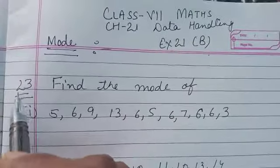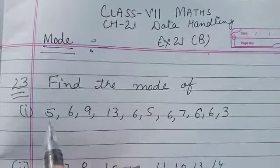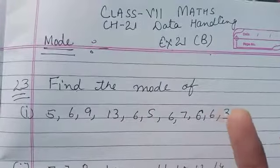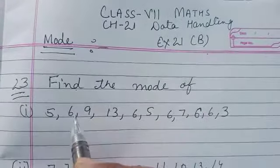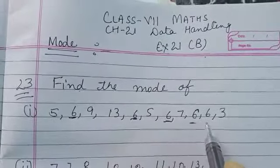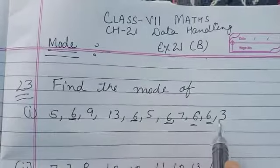So let's do one question with this method. Question 23: find the mode of the data. This is the data given, check which number is repeating many times, maximum times.